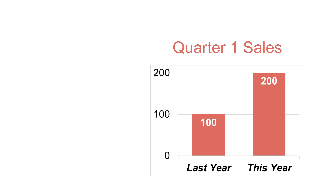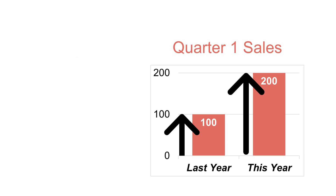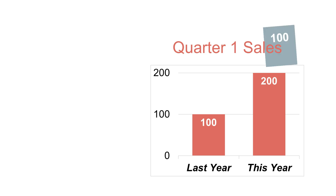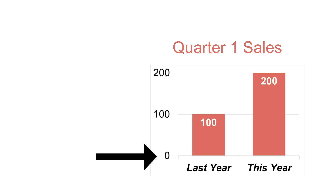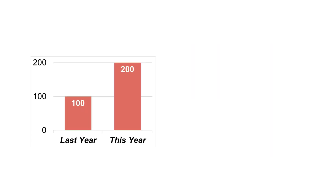In a bar chart, the values are measured using the height of the bars, and the bars are always on the same scale. Here, the second bar is twice as high as the first bar. And it doesn't matter how large or small the chart is, the bars are always drawn to scale. To keep everything on the same scale, a bar chart's numeric axis should always begin with zero. In this chart, the axis begins with zero.